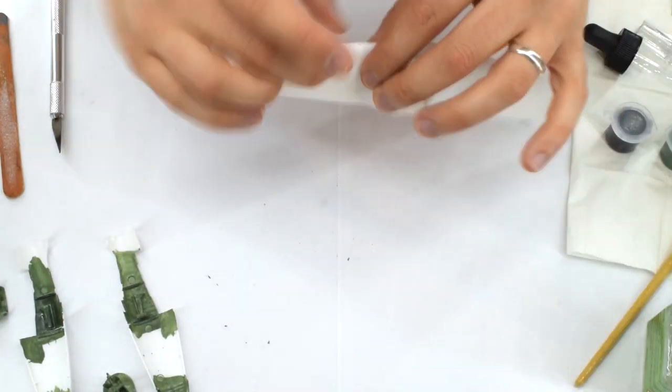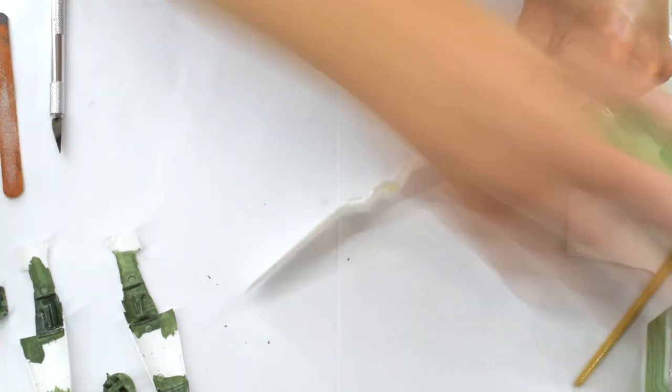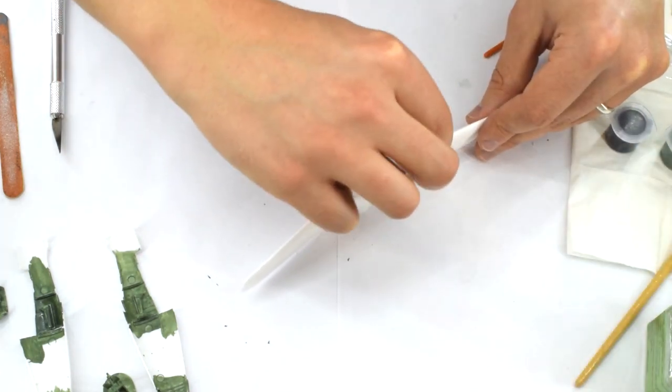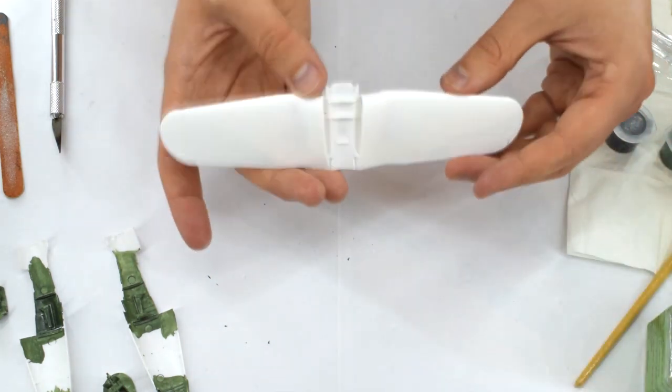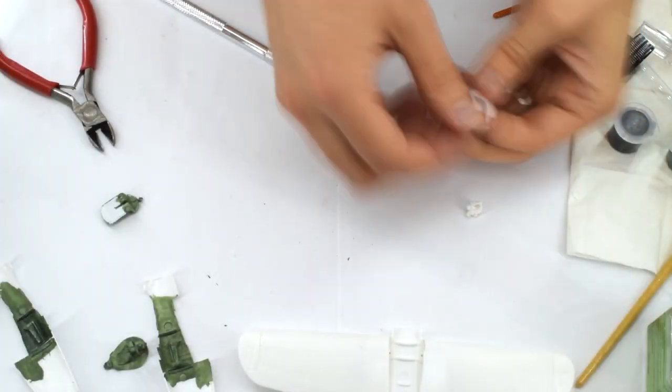The machine gun ports in the front of the wings are also individual moldings, so they can now be added. I found they needed a small amount of cleaning up in order to make them fit nice and neatly.